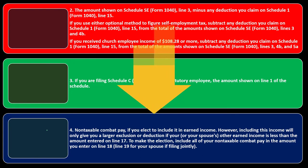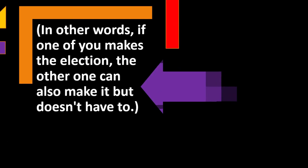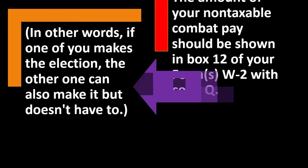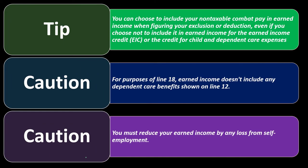Non-taxable combat pay can also be included in earned income if you elect to do so. However, including it will only give you a larger exclusion or deduction if your or your spouse's other earned income is less than the amount on line 17. Combat pay is usually not included in income for federal income tax purposes, but may be included for calculating credits — so it's a multi-purpose tool you can use in different places to maximize benefits. If filing jointly and both spouses receive non-taxable combat pay, each can make their own election independently.